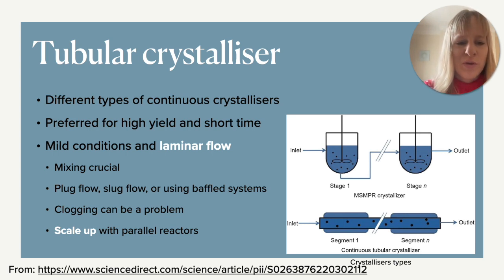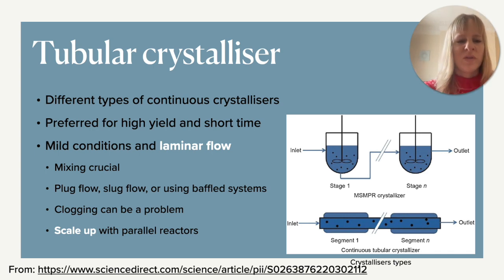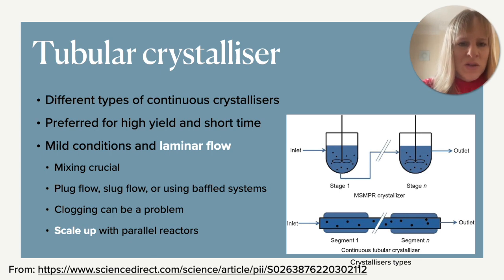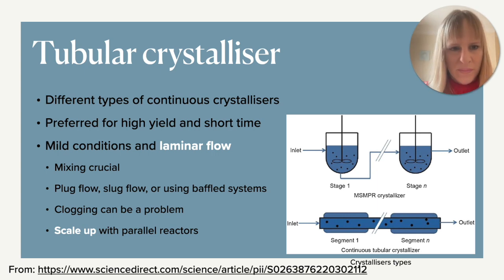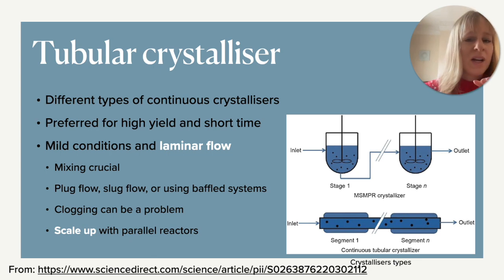There are three types of flow systems you can work with in tubular crystallizers: normal plug flow, slug flow, or oscillatory baffle systems. Because this works with a tube-type design, if you want to scale it up you would use parallel reactors — scaling up simply means having more segments in parallel. This is specifically suited for higher yield and shorter residence time, and all of this is specifically done for proteins and not for small molecules.